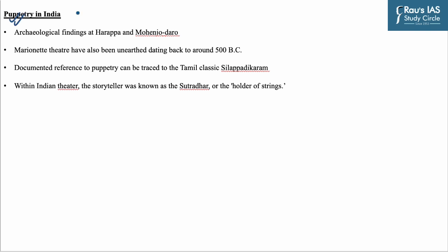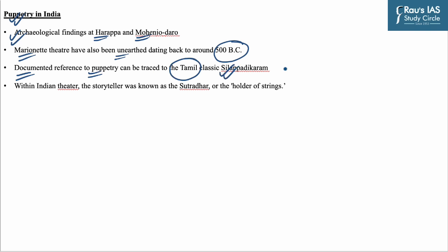Moving on, let us discuss some features related to puppetry in India. Puppetry has held a deep fascination in India for a considerable duration, serving both as a source of entertainment and a tool for education. Archaeological findings at Harappa and Mohenjo-daro have unveiled puppets featuring attached sockets, indicative of puppetry as an artistic expression. References to marionette theatre have also been found dating back to around 500 BC. The earliest documented reference to puppetry can be traced to the Tamil classic Silappadikaram, composed during the 1st and 2nd centuries BC.